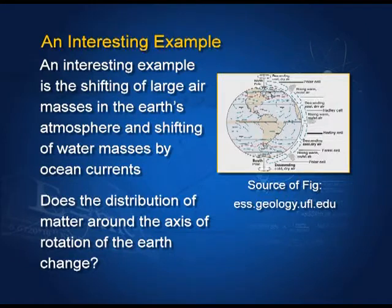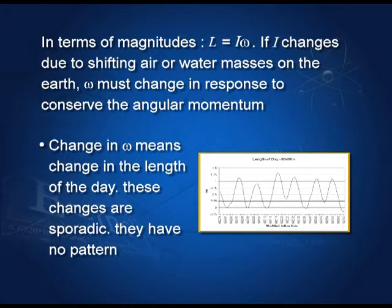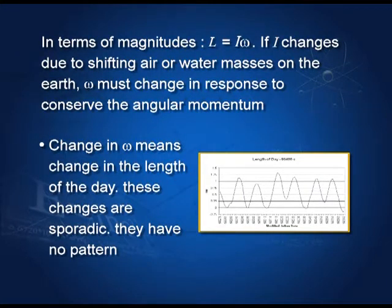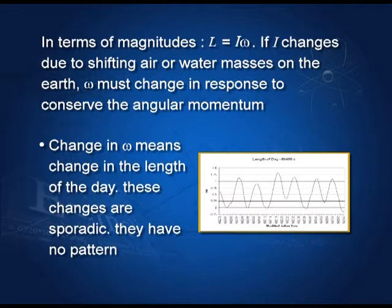There are also currents in the seas and oceans that change the mass distribution around the axis of rotation of the earth. With these two changes — in air masses and water masses in the oceans — the moment of inertia of the earth changes. Since the earth is an isolated body, its angular momentum must be conserved, so ω must change. If the angular velocity changes, the length of the day will change. The amplitude of this change is roughly one to a few milliseconds per day, and it is sporadic with no regular pattern.